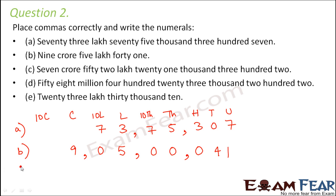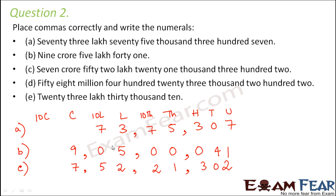Let's have a look at the third one: 7 crore, 52 lakhs, 21,302. So 7 crore goes in the crores place, 52 lakhs comes here, 21,000 would be here, and 302. So this was pretty simple. Now that we have done the first two, the third one seems simple.